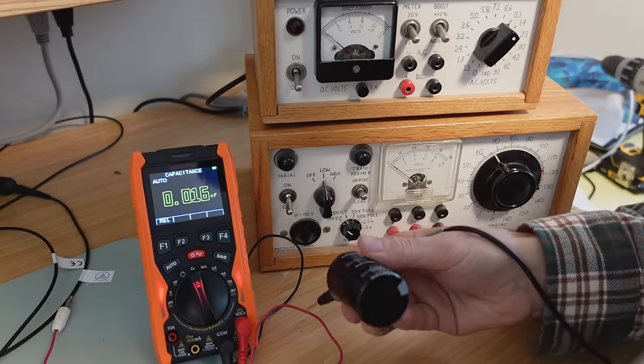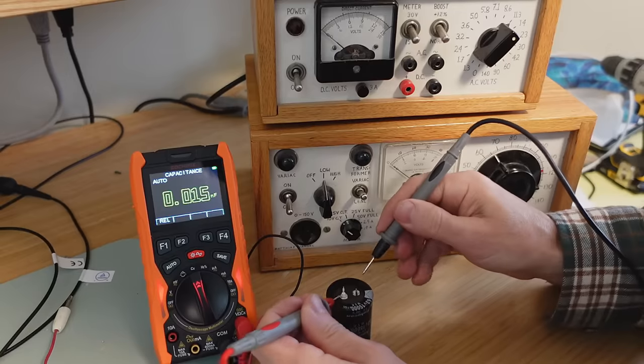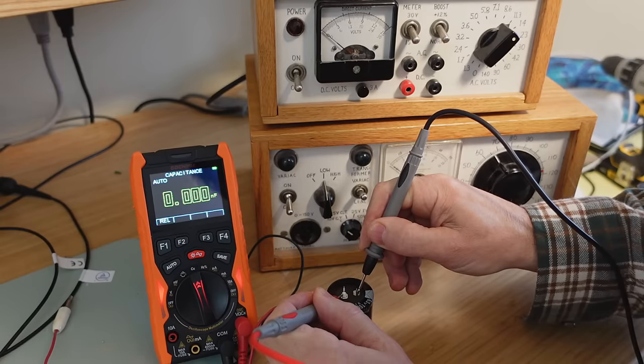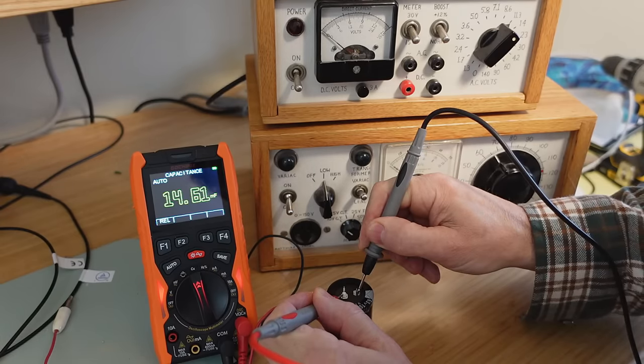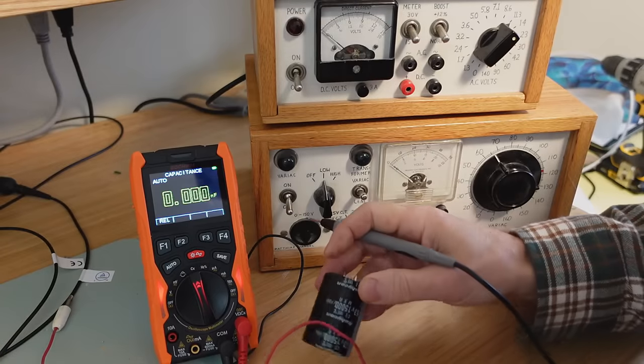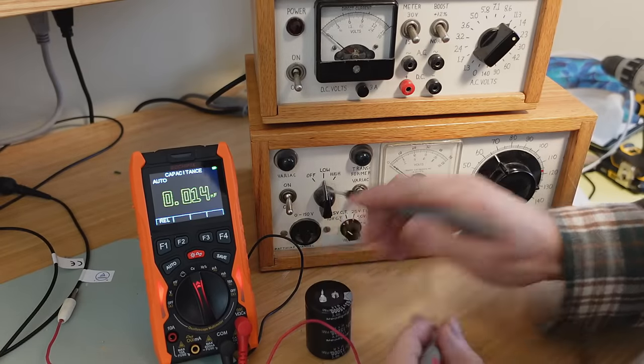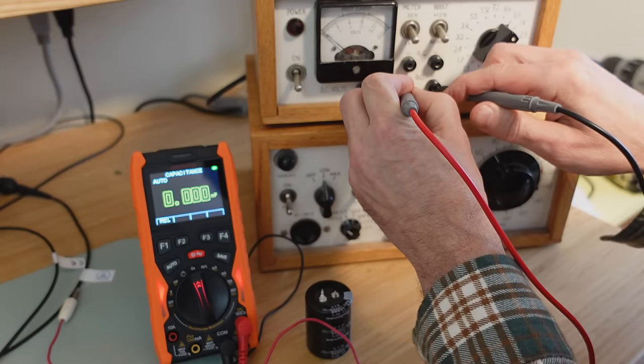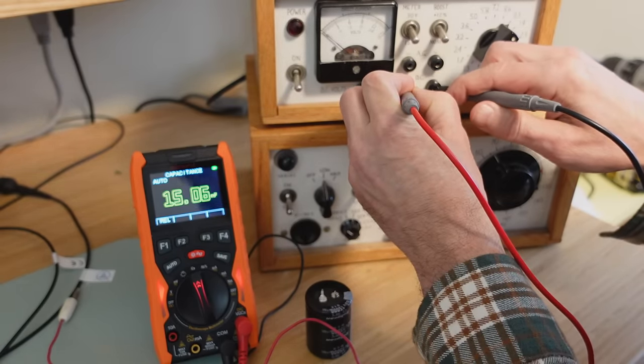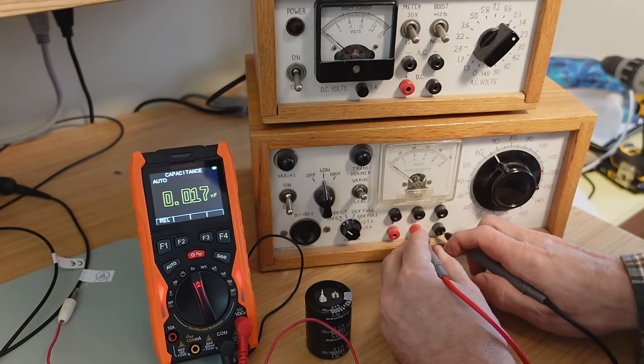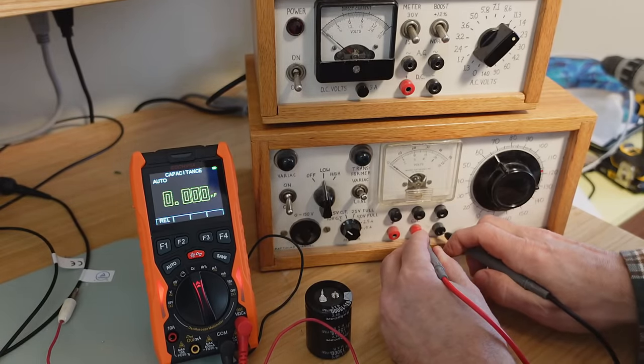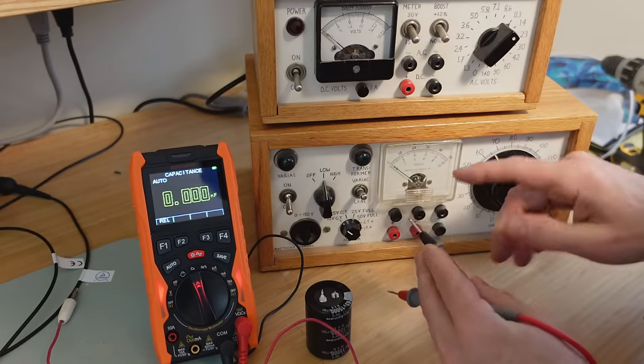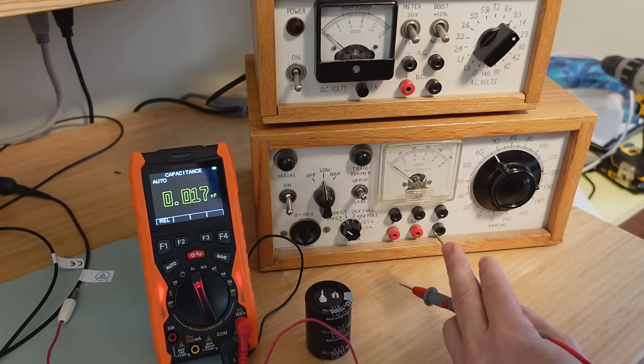This meter can also measure much larger capacitance. So this is a 15,000 microfarad capacitor. Let's measure that. And it takes a while. So it says 14.61 millifarads, so that's pretty close to 15,000 microfarads. I've also used it to check the output filter capacitors on this unregulated power supply and was able to establish that I didn't need to replace them. Same thing. And on this one I've got an 85,000 microfarad capacitor and it can measure that too, but it takes a while. So it says 72 millifarads, so that cap in there may not be up to its rated capacity anymore, but it's also 50 years old.